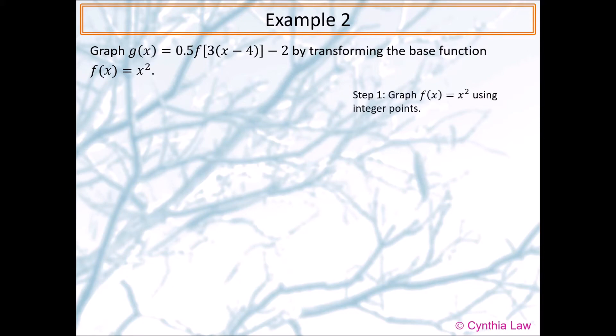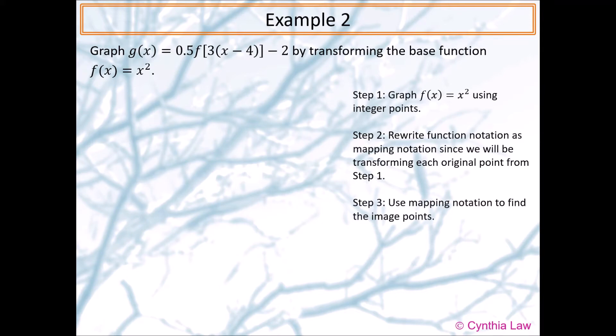The steps involved are: Step 1, graph the base function using integer points. Step 2, rewrite function notation as mapping notation so that we can transform the individual points we found in step 1. Step 3, use mapping notation to find the image points. Step 4, graph these image points and label the new function.